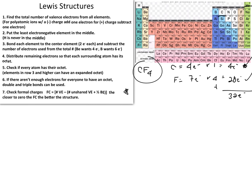This brings us to step number two: put the least electronegative element in the middle. We have to choose between carbon and fluorine. Fluorine is the most electronegative element — it desires electron density most intensely. Carbon, by default, is the least electronegative, so we place carbon in the middle and surround it with the fluorine atoms.